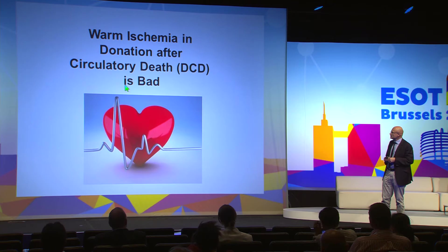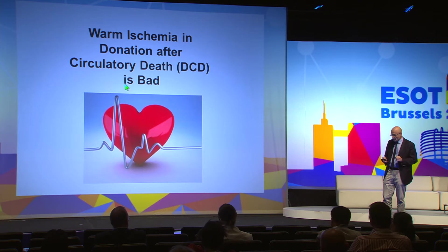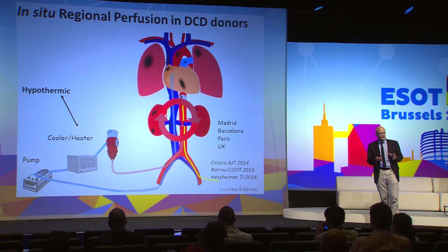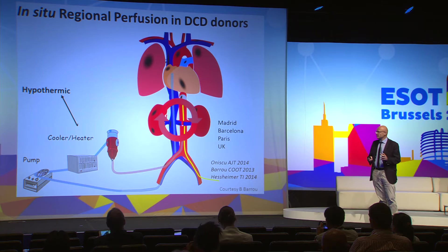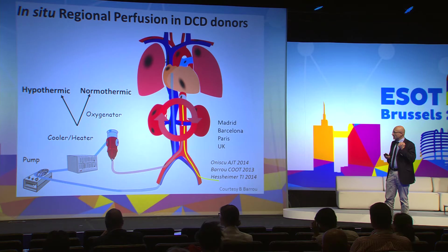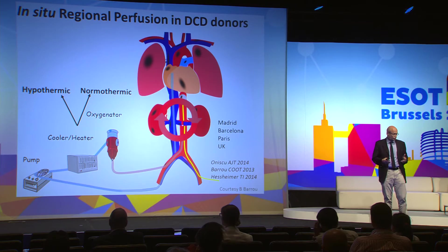Needless to say, warm ischemia in donation after circulatory death is bad — if there is no oxygen and it's warm, it's really very bad. To try to resolve that, new protocols have been introduced trying to cool the organs in DCD as soon as possible using automatic systems of perfusion. But now there is a new generation of systems, and there is clearly a trend to switching from hypothermic perfusion with no oxygen to perfusion at higher temperature and with oxygen — clearly aiming to resuscitate and recondition those organs in situ.